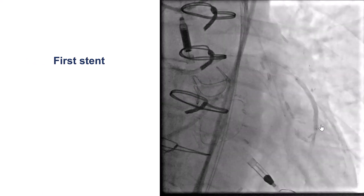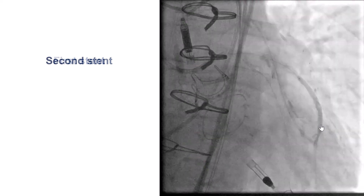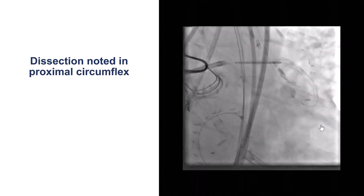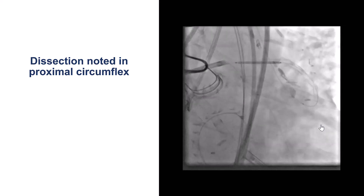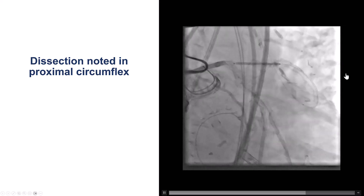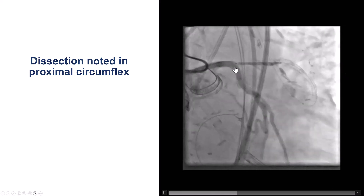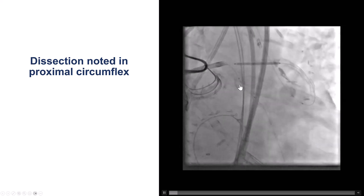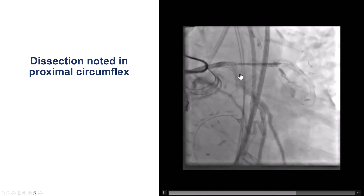We then started stenting from more distal to more proximal, placed the first and second stents. Then a third stent was placed going all the way from the LAD to the left main. But at this point, there was some haziness and some dissection into the proximal circumflex.